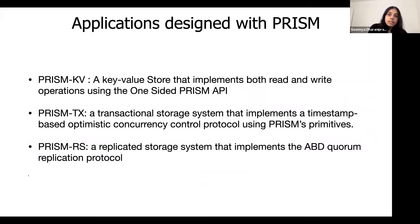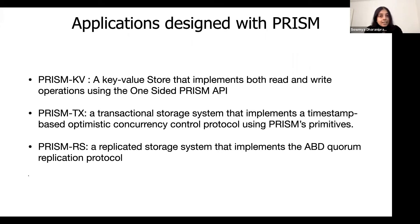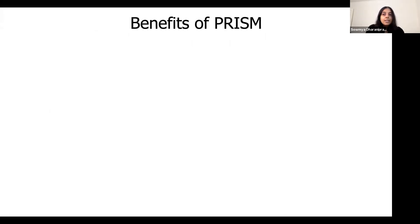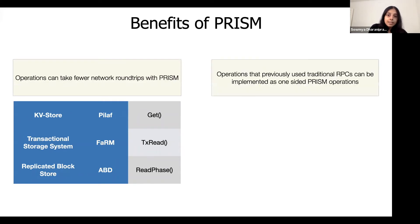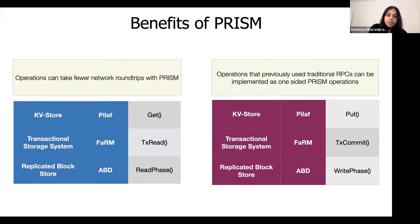To demonstrate the potential benefits of PRISM, we used three case studies: a key value store, a replicated block store, and a distributed transactional storage system. Each of these applications is widely used in practice and has been the subject of much research. Our proposed extensions allowed us to efficiently implement all of these applications entirely in terms of the one-sided PRISM primitives. There were mainly two kinds of benefits: we could implement operations that already used one-sided RDMA using fewer network roundtrips, and we could express operations that originally had to be implemented as RPCs efficiently using the one-sided PRISM API.